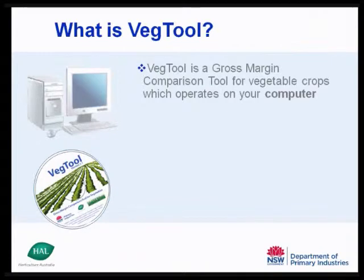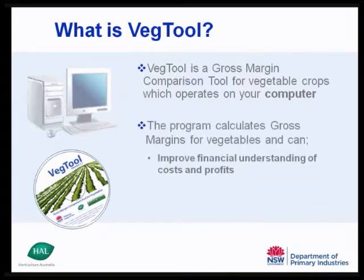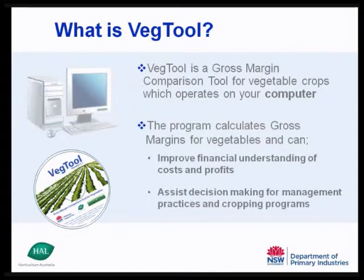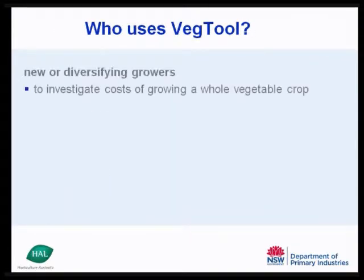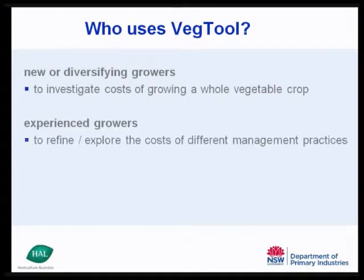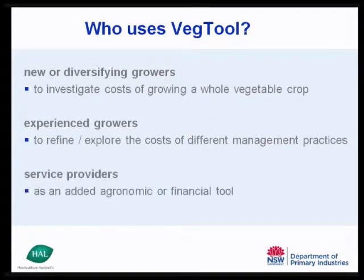VegTool is a gross margin comparison tool for vegetable crops which operates on your computer. The program calculates gross margins for vegetables and can help improve the financial understanding of growing costs and profits, and can assist decision making for management practices and cropping programs. VegTool can be used by a range of people in the industry. New or diversifying growers may want to investigate the cost of growing a whole vegetable crop, experienced growers may want to refine or explore the cost of different management practices, and service providers can use it as an agronomic or financial tool.